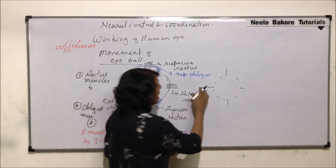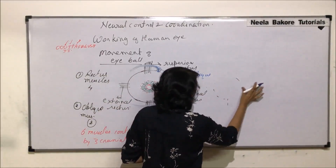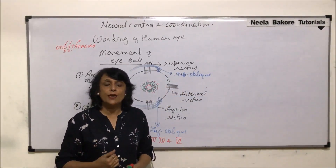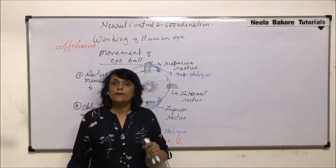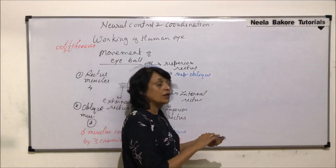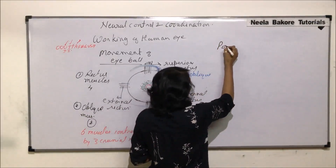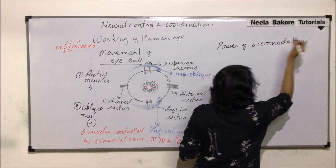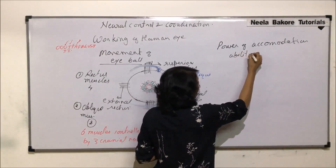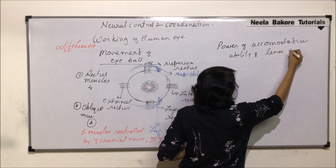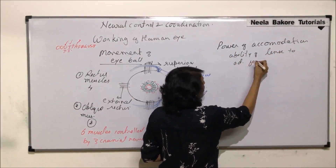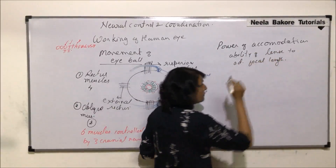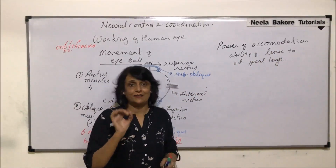The next topic is the power of accommodation. Accommodation is the ability of our eye to see objects at different distances by adjusting the focal length of the lens. This is called the power of accommodation — the ability of the lens to adjust its focal length so that every time the image is formed on the retina.